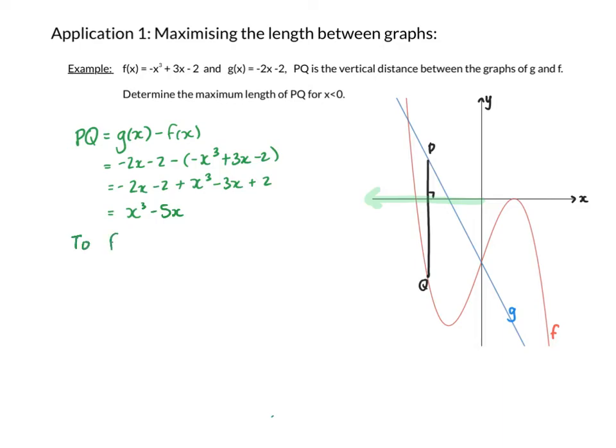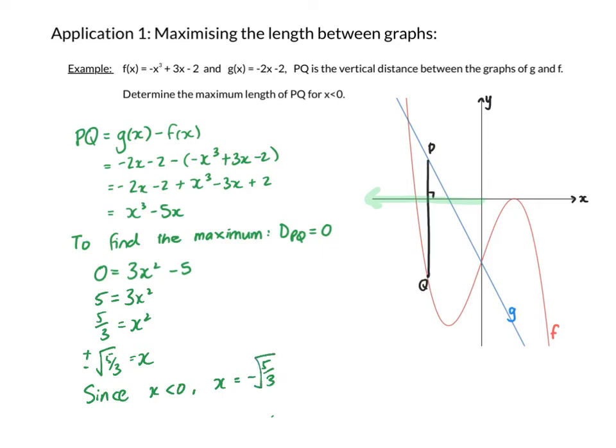But I want to know the maximum length of it. So to find a maximum, I always find the derivative and set it equal to zero. So in this case, to find the maximum length of PQ, I'm going to take the derivative of PQ and set it equal to zero. So the derivative of PQ is 3x squared minus 5. And now I solve the equation. Since I've got a square, when I find the square root, I must remember that I could have a positive or negative solution. Since the instruction in the question says that x is less than zero, my only valid answer will be the negative one.